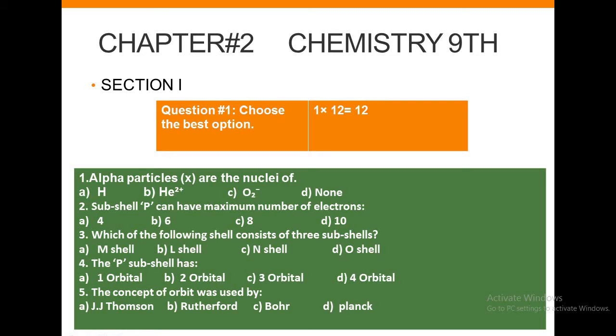Next: Which of the following shell consists of three sub-shells? a) M shell, b) L shell, c) N shell, or d) O shell. Next: The P sub-shell has: a) 1 orbital, b) 2 orbitals, c) 3 orbitals, or d) 4 orbitals.